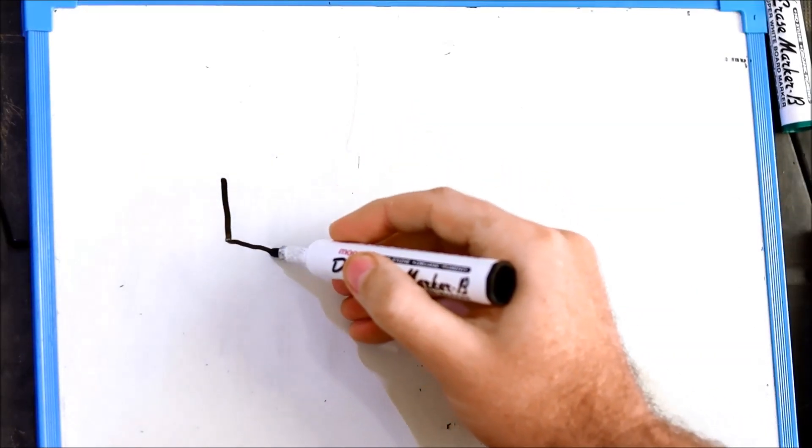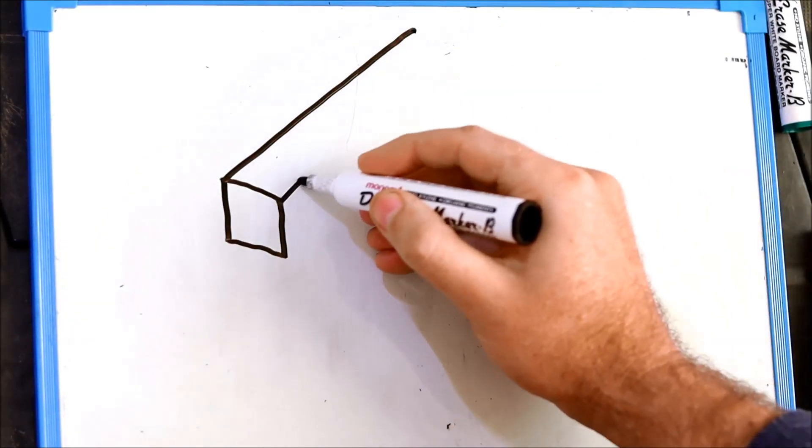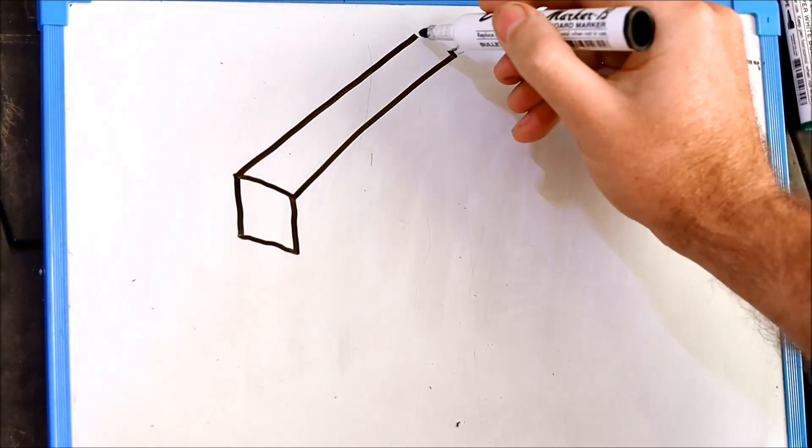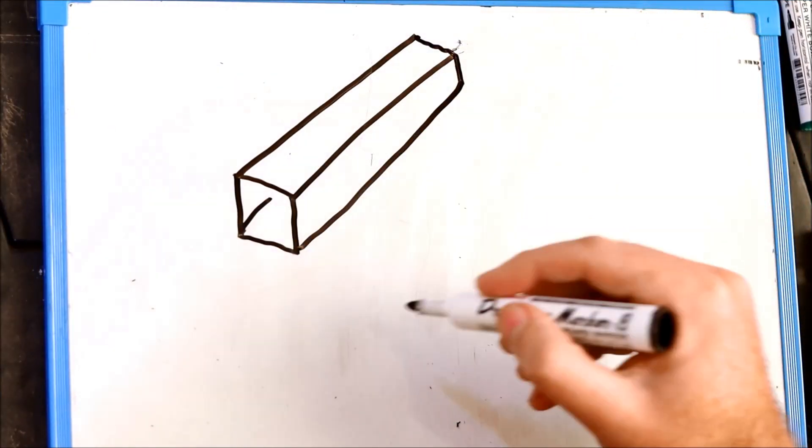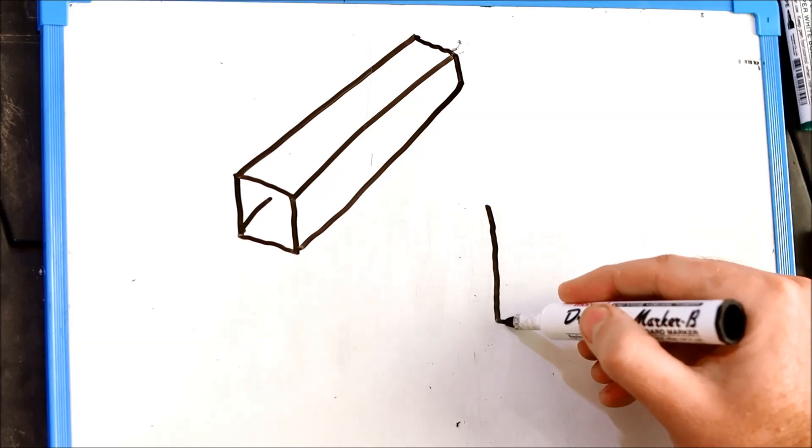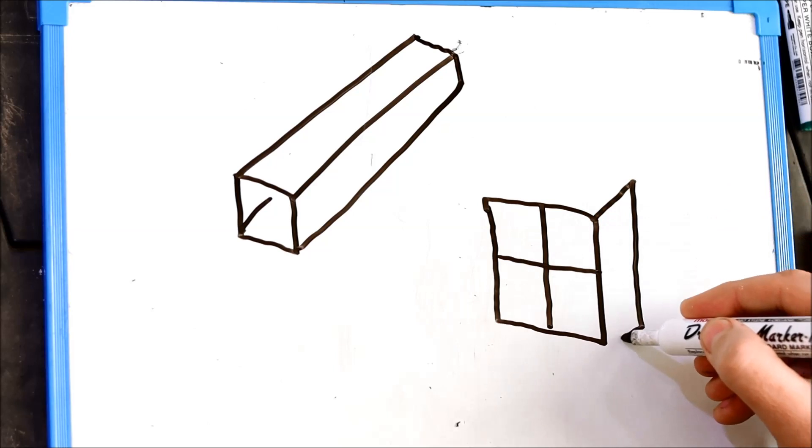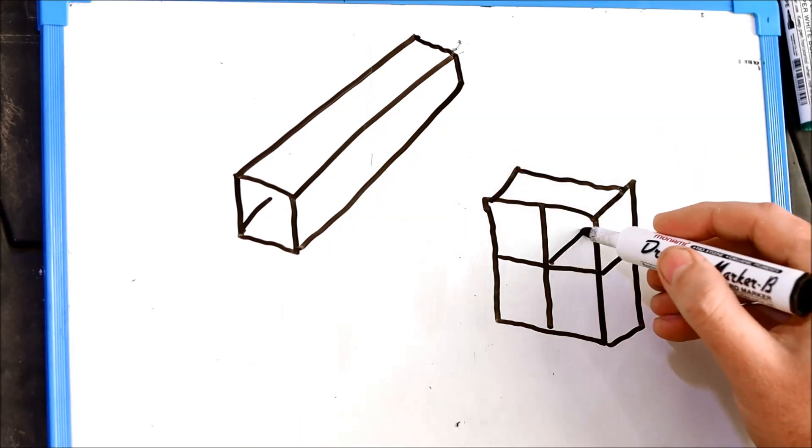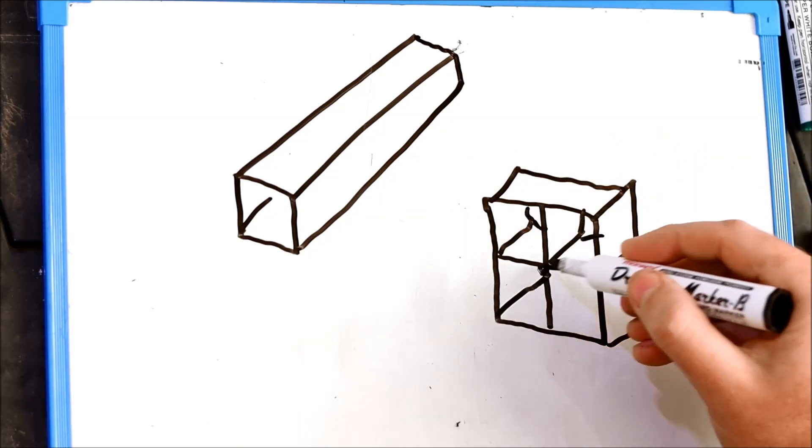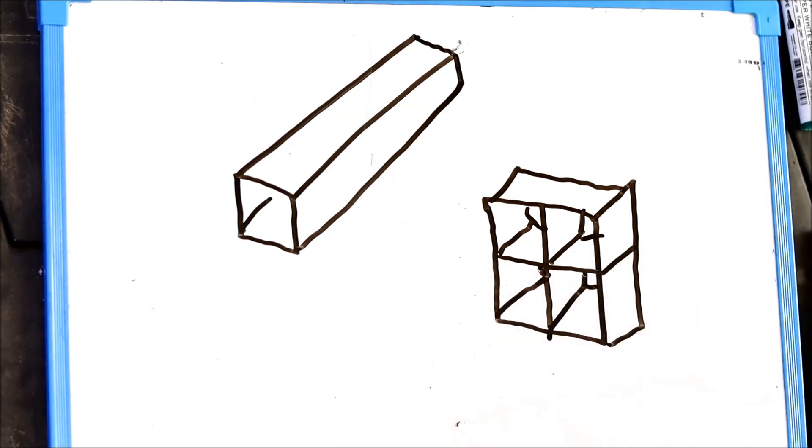Another approach is to take a long thin duct and simply chop it up into shorter sections that are stacked in parallel to each other. The magnetic field strength and electrical resistance within each section remains exactly the same. But since the total cross-sectional area of the duct is now four times as large the inlet velocity will be four times less.